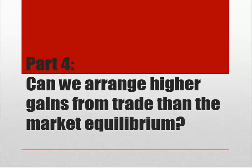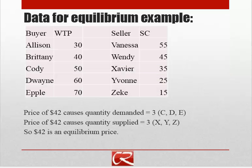Let's think about measuring what our total gains from trade are and seeing if we can do better. We're going to think about a set of different potential buyers and sellers. Each buyer is willing to potentially buy one unit if the price is lower than their willingness to pay, and each seller is willing to sell one unit if the price is higher than their seller costs. People only go through with the transaction if they can get a benefit from it.